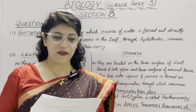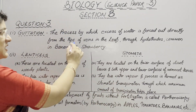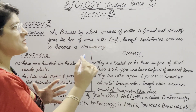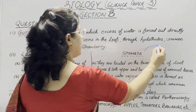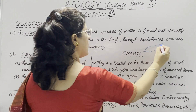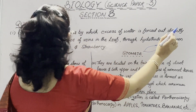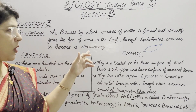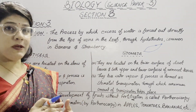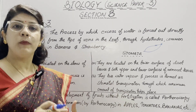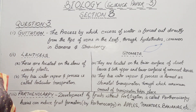In question number 3, the first part is to define Guttation. The process by which excess of water is forced out directly from the tips of the veins of the leaf through hydathodes. This is common in banana, strawberry, fern, tomato, etc., especially early morning during humid environmental conditions.